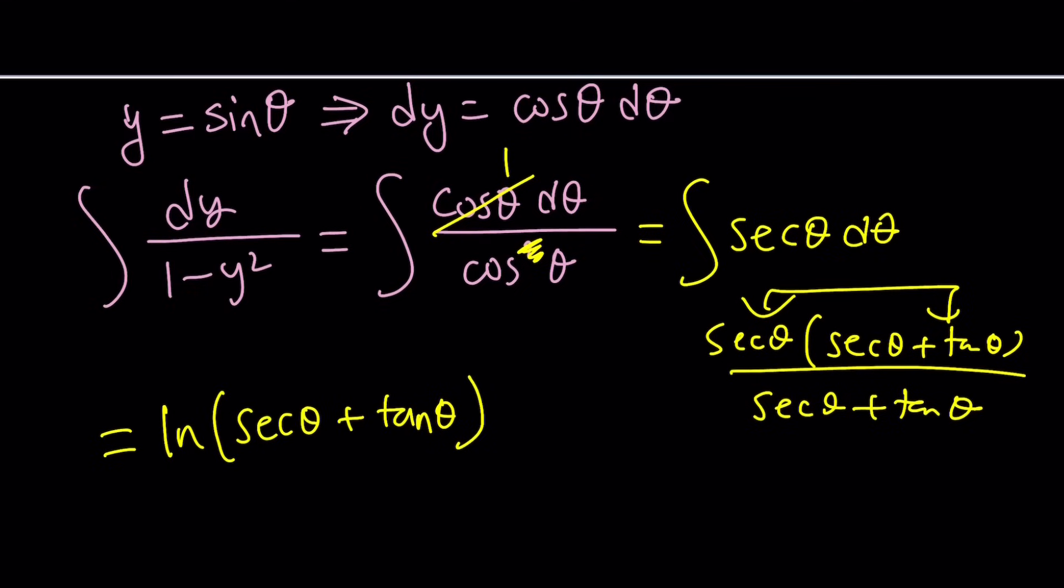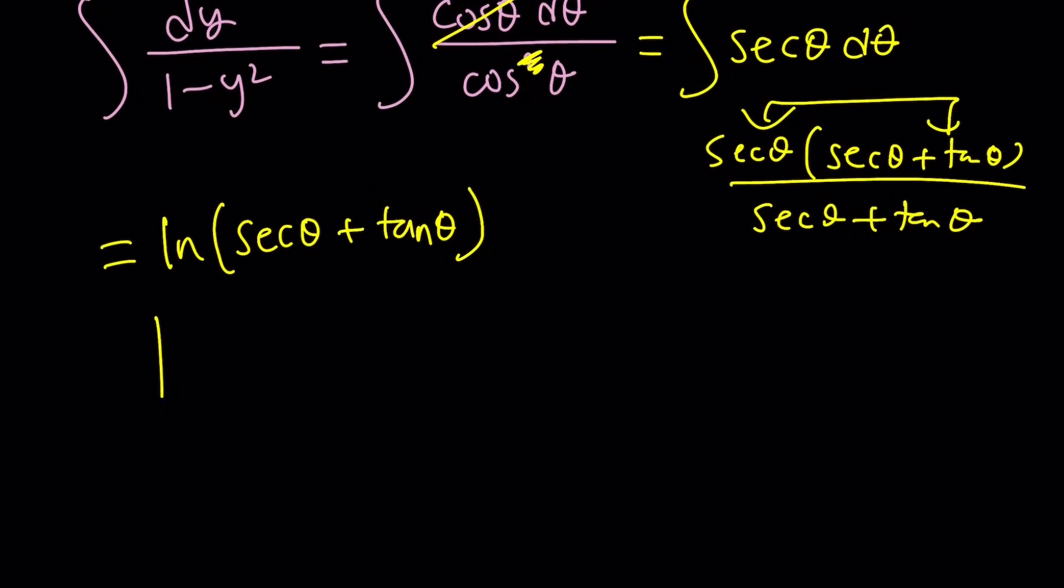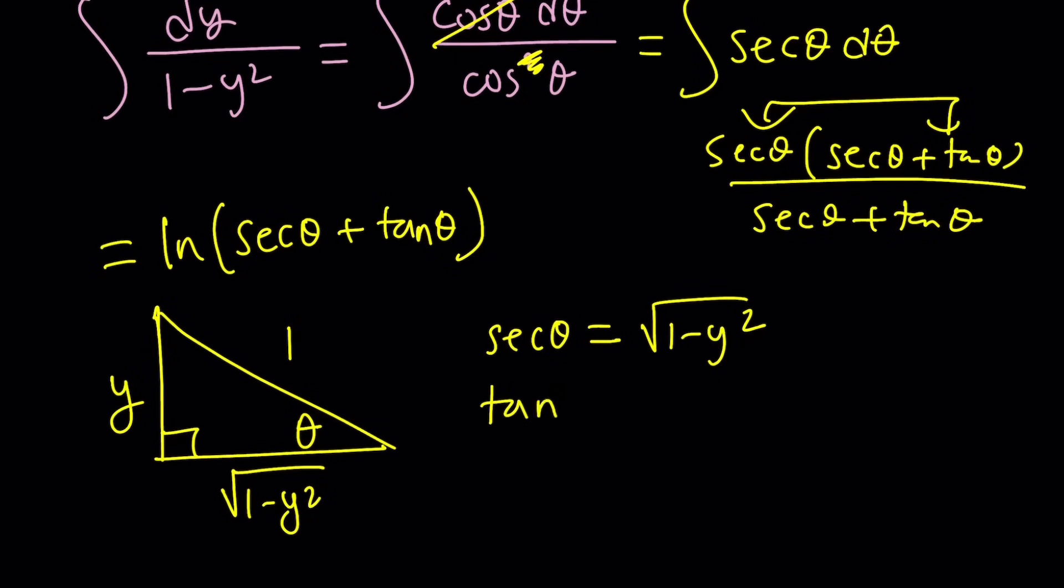Now, what is secant theta? What is tangent theta? Well, because we made an assumption like this, we can transform. Like sine theta is y, so we're going to draw a right triangle. Theta doesn't have to be acute, by the way, but we're just going to use variables here. Sine theta is y, so it's going to be y and 1. This is going to be the square root of 1 minus y squared from Pythagorean theorem. And then secant theta is just going to be the reciprocal of cosine, which is 1 over square root of 1 minus y squared. So secant would be this one, and tangent would be y over square root of 1 minus y squared.